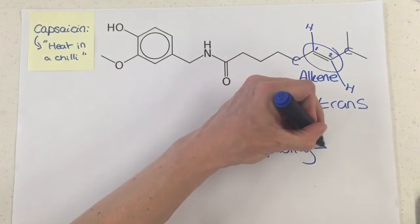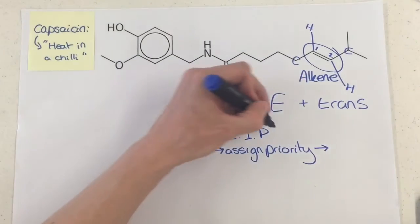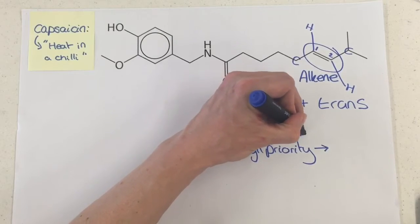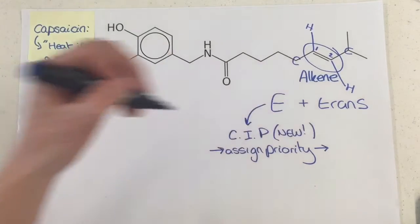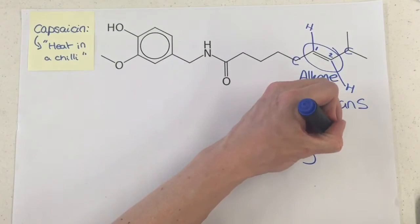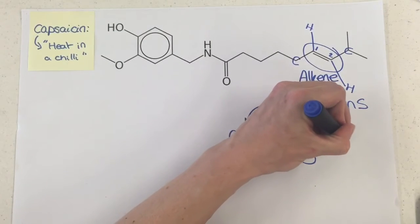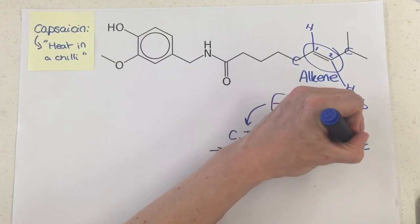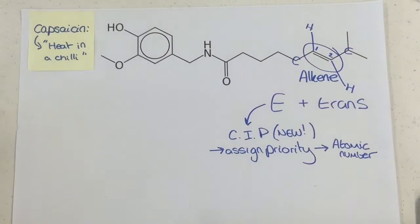Now the priority — lots of people make an early mistake with this. Remember, this is brand new to the specification starting 2015 on OCR A. The priority is assigned using the atomic number. Remember, that's the number of protons — it's not the mass number, not the Mr, not the Ar. It's got to be atomic number.